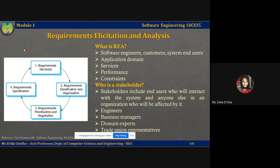Requirements discovery is the process of interacting with stakeholders to discover their requirements; domain requirements from stakeholders and documentation are also discovered during this activity. The second step, requirements classification and organization, takes the unstructured collection of requirements, groups related requirements, and organizes them into coherent clusters. The most common way of grouping requirements is to use a model of the system architecture to identify subsystems and associate requirements with each subsystem. In practice, requirements engineering and architectural design cannot be completely separate activities.